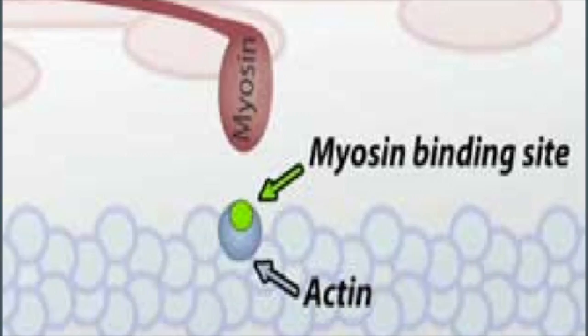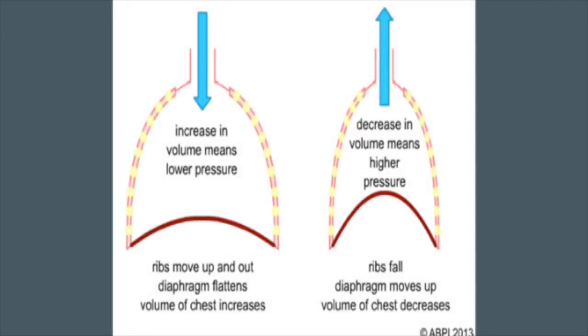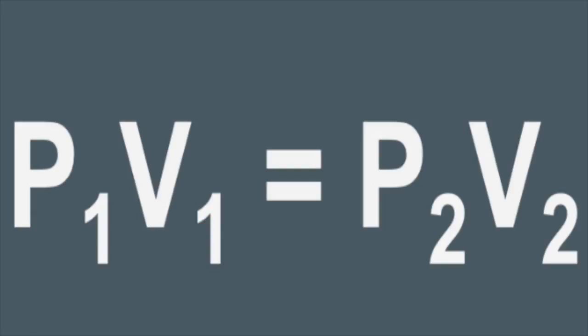With anesthesia and pancuronium bromide, there is a blockage at the second binding spot, so the myosin cannot reattach to the actin. This means that the muscle cannot contract and the airways will be blocked. However, this is not expected to cause death, so pancuronium bromide is then injected. Pancuronium bromide causes death by asphyxiation because it causes the diaphragm to paralyze. The diaphragm is a respiratory muscle that is key for breathing. Humans use a form of breathing called negative pressure breathing, meaning that we don't actually inhale the air — it is due to Boyle's Law.